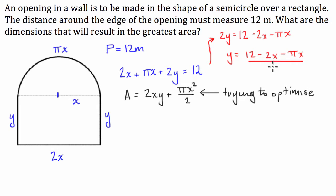Now, 2y is equal to 12 take 2x take pi x. Now, with this part here, we can, to make it easier for us down the track a little bit, what we're going to do is we're going to combine our like terms here.